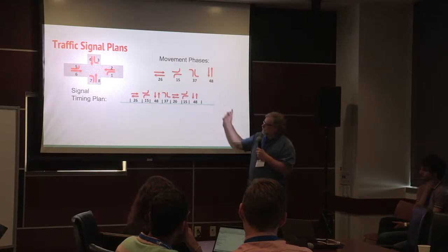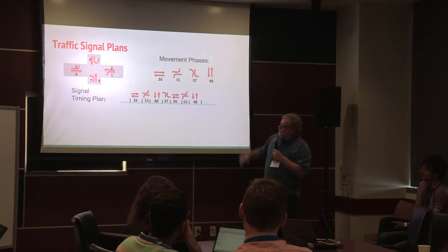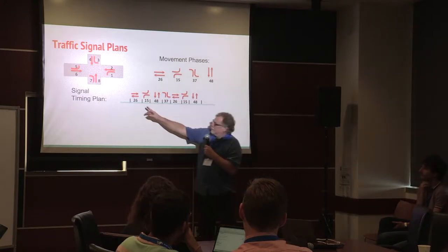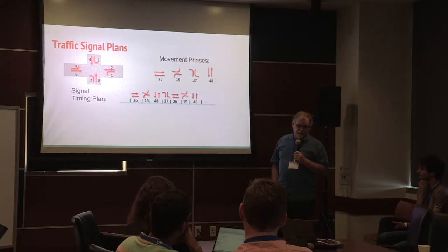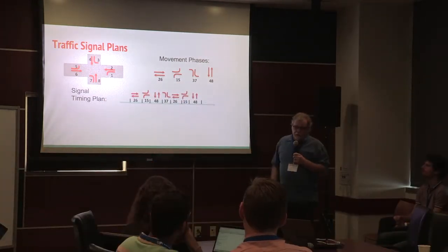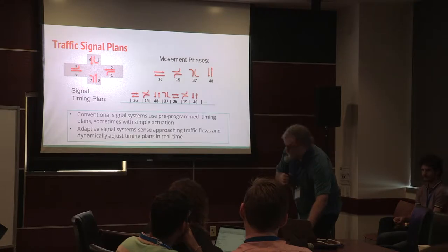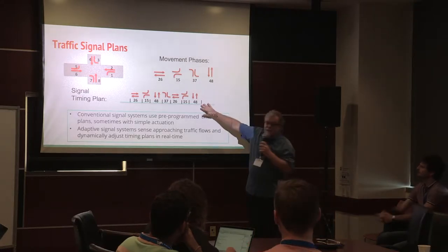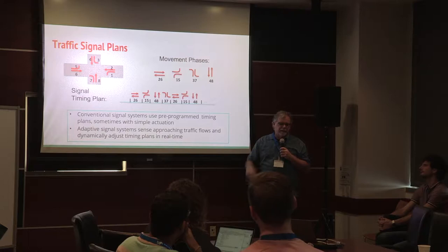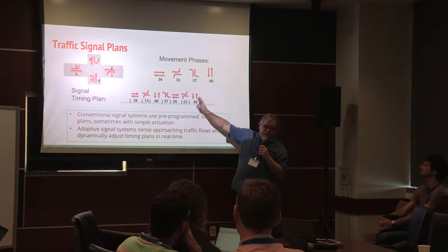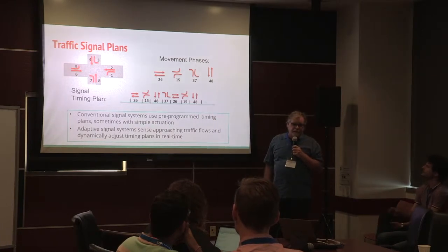Conventional traffic signal systems build these plans in advance — pre-programmed. You do some data analysis, count cars for a day or two, figure out volumes, take a snapshot, and then plug in the plan and it just runs over and over again. Adaptive signal systems, on the other hand, try to sense approaching traffic and react dynamically to traffic on the road. This idea is not new — it's been around since the 1980s.